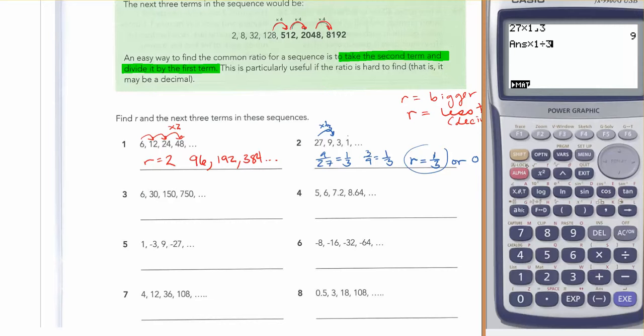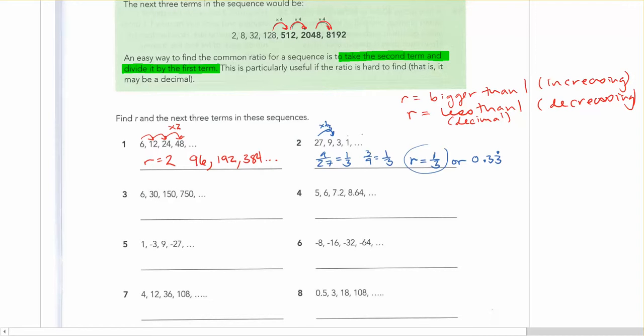Again you can write 1 third as a divide by instead of a fraction if you feel like it. And again times by 1 third. And times by 1 third. You're going to start getting decimals here. So you can write the decimal or you can use your f to d button and write your fraction. But what we get here is going to be 1 third, then 1 ninth, and then 1 27th. And then the sequence will keep going.